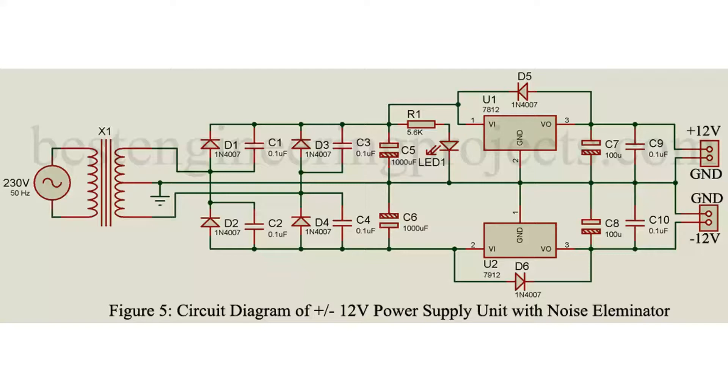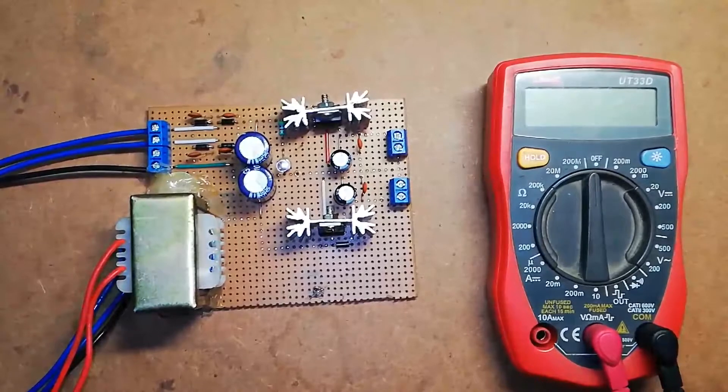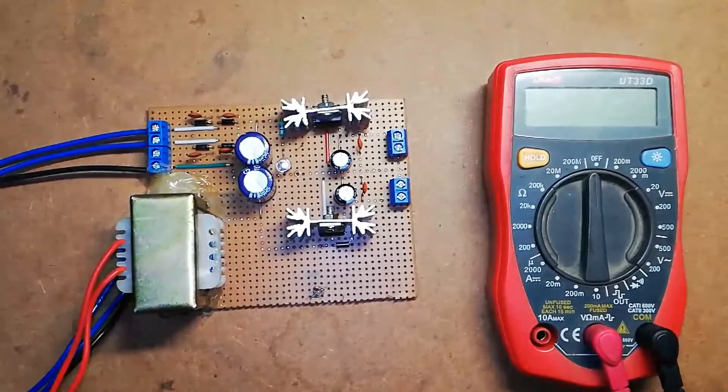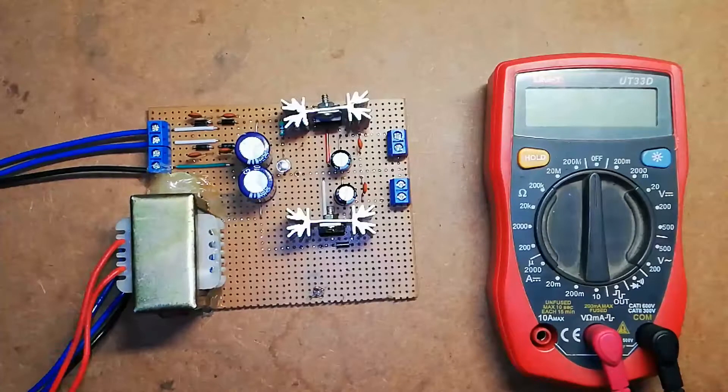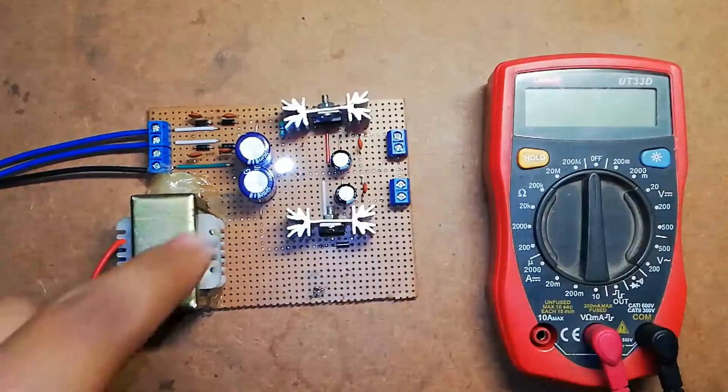Let's see the complete circuit diagram. It's time to see the output. After connecting all the components, now let's see the output of this power supply. Connect the primary winding to AC mains and switch on. As you can see, this LED glows up indicating power is available to this circuit.